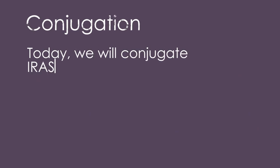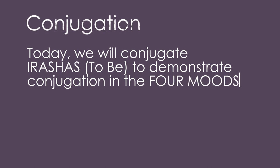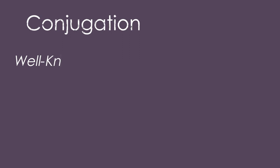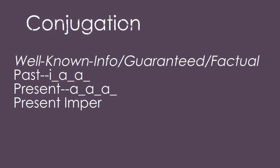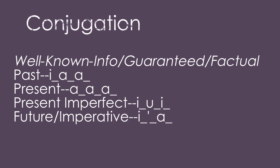We will conjugate a sample word to demonstrate the conjugations in this language. The word 'to be' is arshas. The conjugation has four moods based on how well you know the information. If the information is well-known, guaranteed, or factual, you use the following: in the past, it is irashas; in the present, it is arshas; in the present imperfect, it is irushis; and in the future or the imperative, it is irshas.